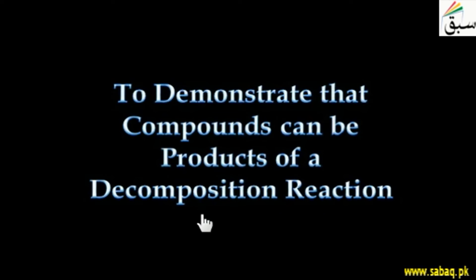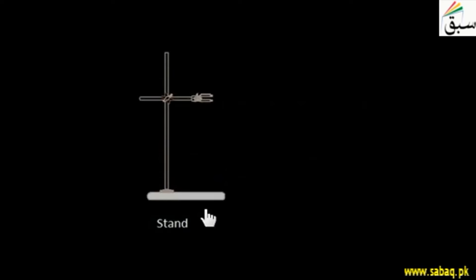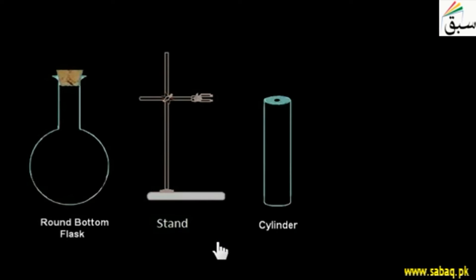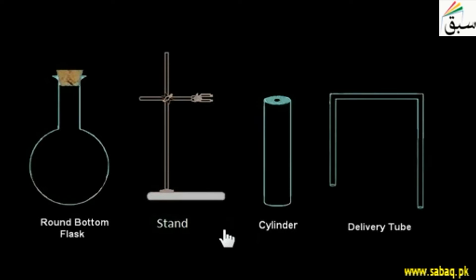First of all, the apparatus we will need: a stand, a clamp plug-up, a clamp stand, a round bottom flask, a cylinder, a lid, and a delivery tube.